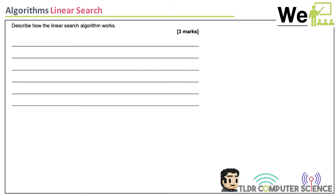Last week in our first lesson back, we looked over linear search, binary search, and the two sorting algorithms. Sometimes it's describe how it works, sometimes it's demonstrate. This one is describe, so it's three marks — you need to write three points. What are the three steps in a linear search algorithm?